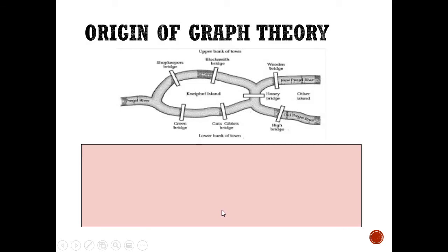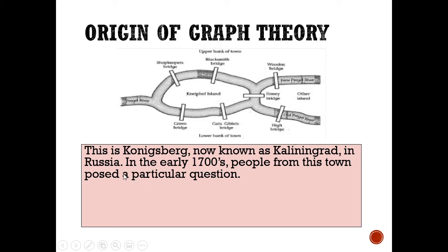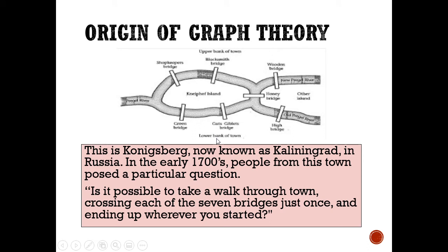Now where did this graph theory or when did this graph theory started? So it started in the 1700s in Russia, where back then, people are wondering, in this part of Russia, is it possible to take a walk through town, crossing each of the seven bridges right here, exactly once, and ending up where you started? So this is the questions that came to the minds of the people back then.